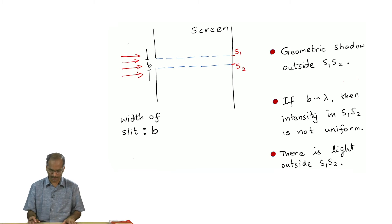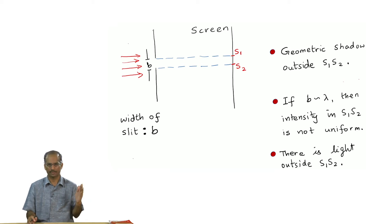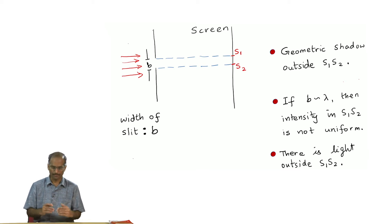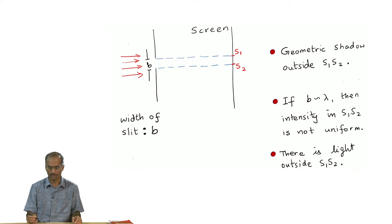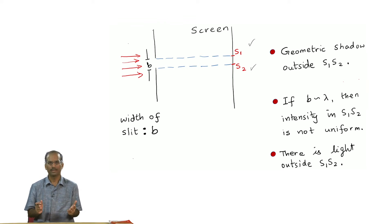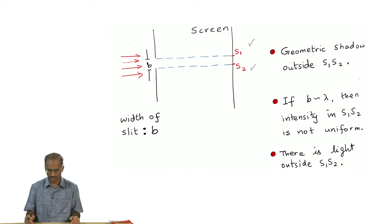Let me explain diffraction with the figure that I have here. Let us assume that there is a light wave front coming from the left hand side - it is a plane wave front falling on a slit whose width is b. If light were exactly travelling in straight lines, what you would expect is that if I map the slit to a screen a little bit away, I can mark two positions S1 and S2. Only that portion between S1 and S2 would be uniformly lit up and outside of S1 and S2 the screen would be completely dark. This is what you would expect.